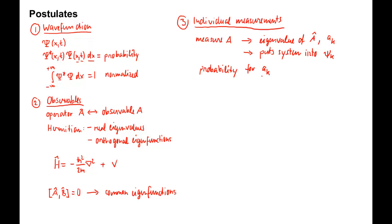If you write the wave function in terms of the eigenfunctions of the operator with eigenfunctions psi k and eigenvalue ak, we have psi equals the sum over k of ck times psi k. Then this probability for the eigenvalue ak equals to the norm of ck squared.